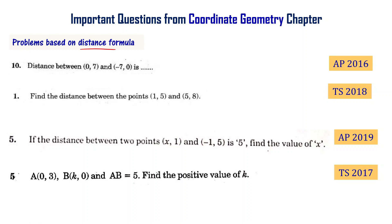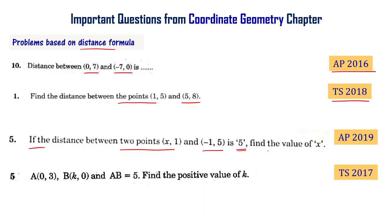Problems based on the distance formula which are important. Find the distance between (0,7) and (-7,0) from the AP final exam 2016. Find the distance between (1,5) and (5,8) from the Telangana final exam 2018. If the distance between points (x,1) and (-1,5) is 5, find the value of x from the AP final exam 2019. A is point (0,3), B is point (k,0), and AB equals 5; find the positive value of k from the Telangana final exam 2017.